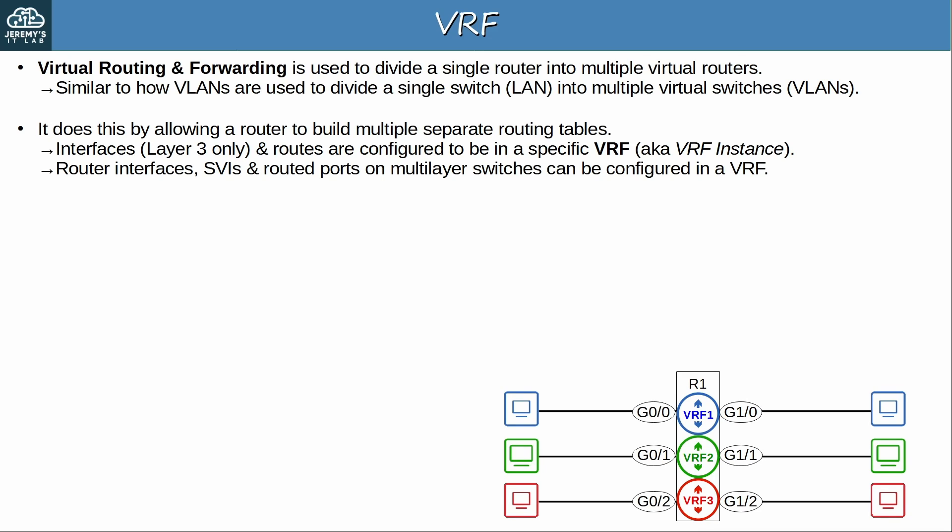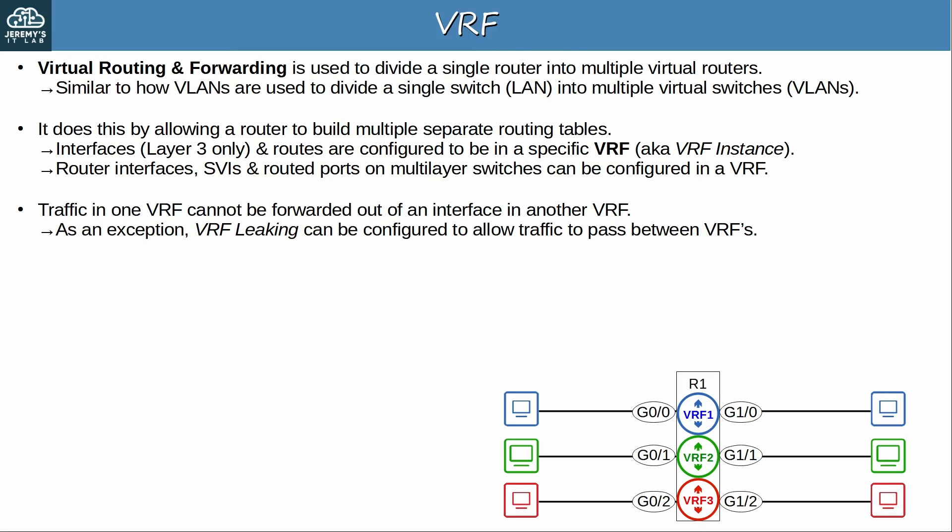It's a layer 3 concept. Traffic in one VRF cannot be forwarded out of an interface in another VRF. However, as an exception, VRF leaking can be configured to allow traffic to pass between VRFs. That is a more advanced concept though, and I won't cover it in this video.